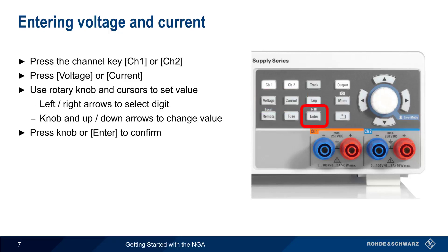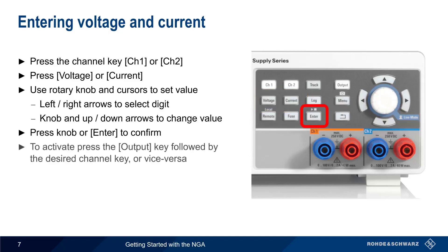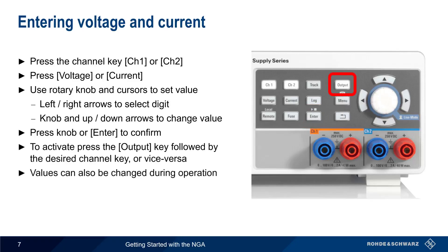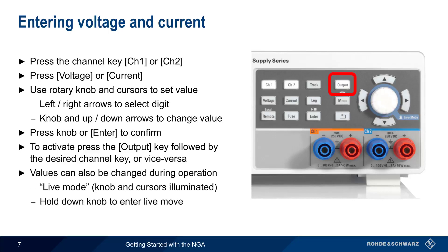To activate the output, simply press the output key and the desired channel, or vice versa. Values can also be changed during operation using the illuminated knob and cursors in so-called live mode, which is entered by holding down the knob.